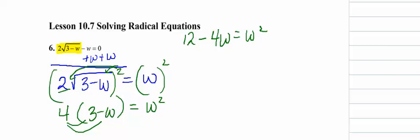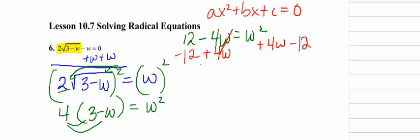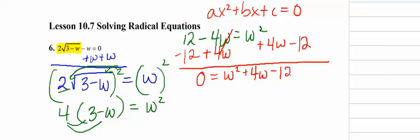Now I can see here that I've got a W squared, so I need to get it set up for factoring AX squared plus BX plus C is 0. So we've got to set this equal to 0. So we need to add the 4W and we put it after the W squared. And we need to subtract 12. We put it at the end. So I get 0 equals W squared plus 4W minus 12.